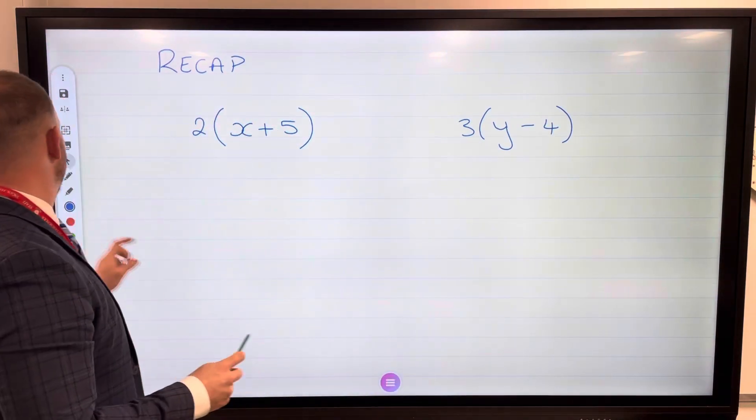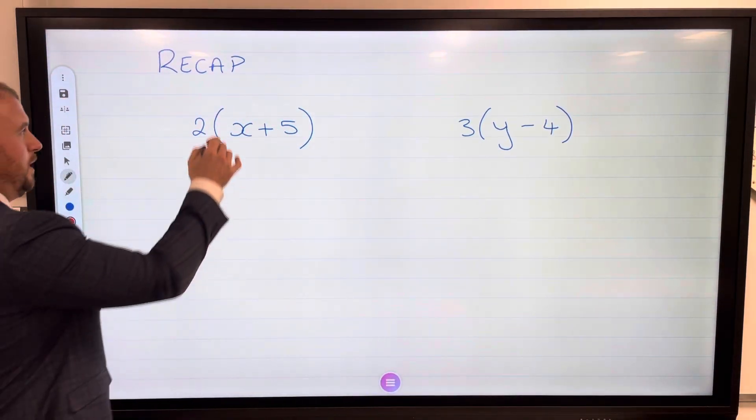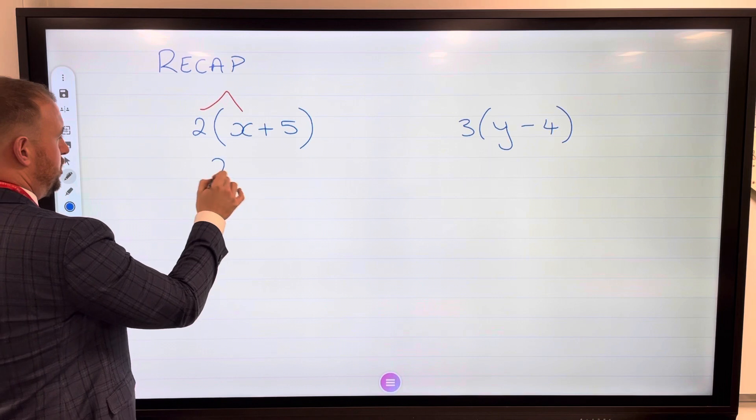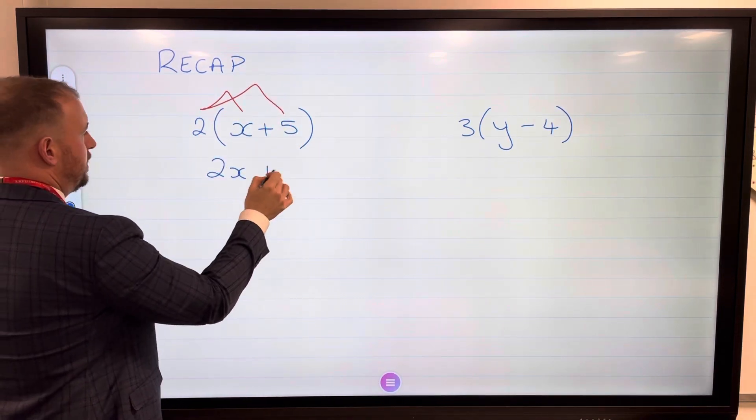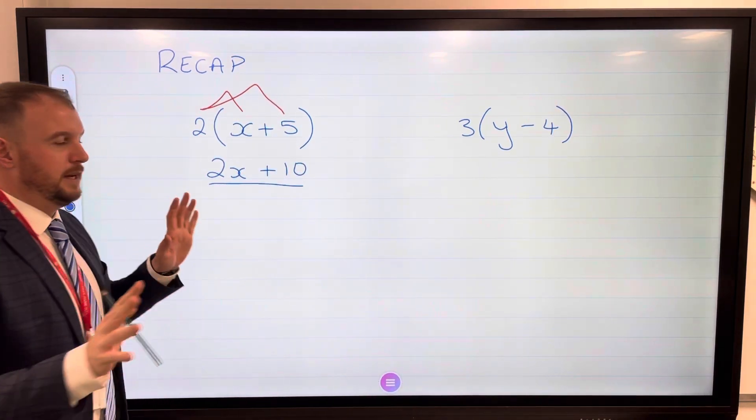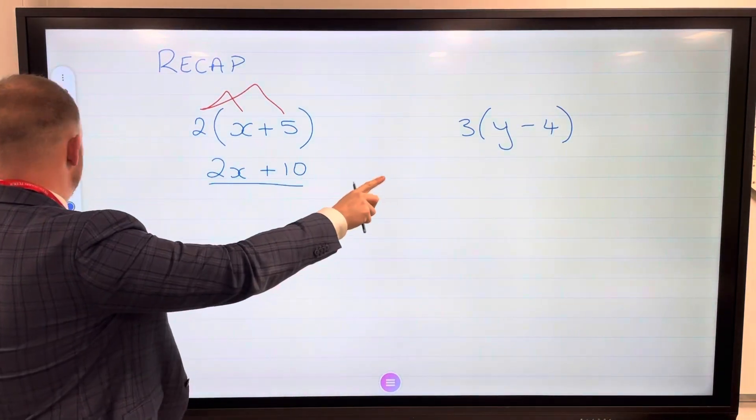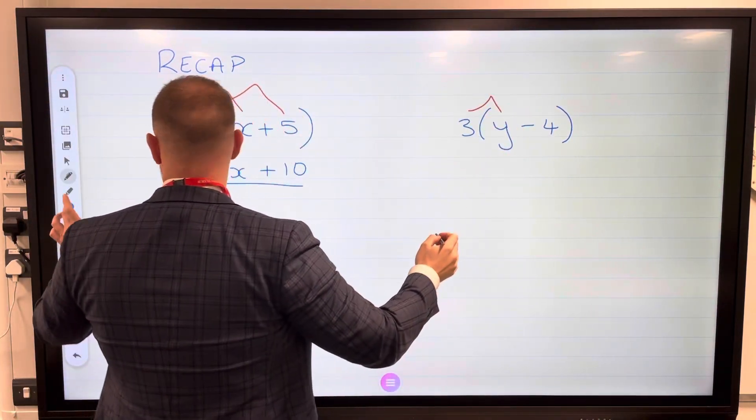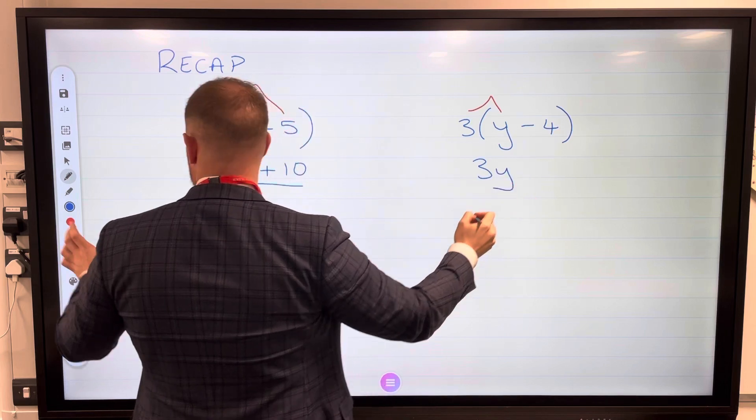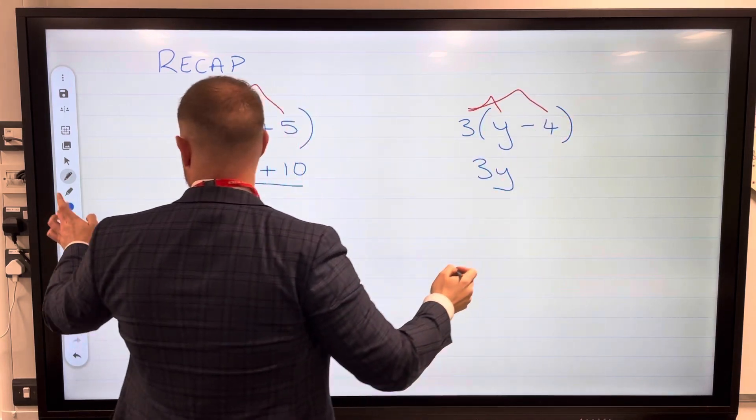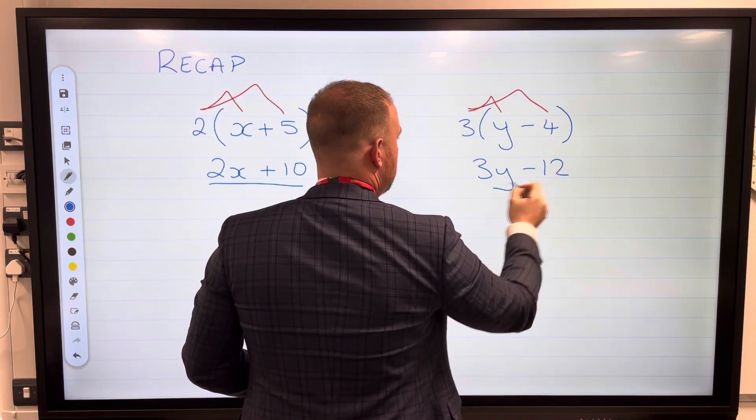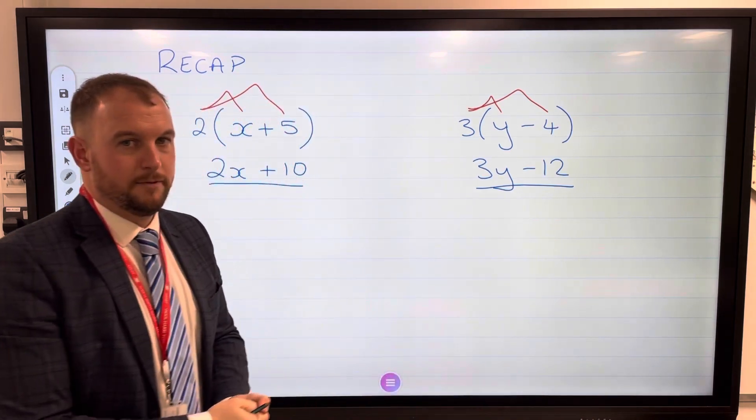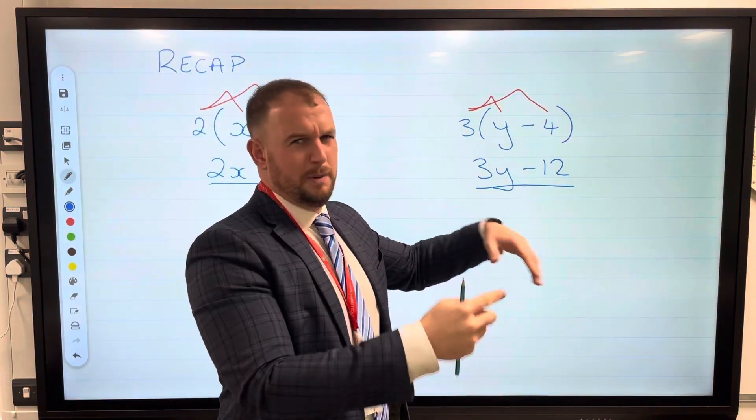But just to recap, I want to show you how we expand. We do 2 times x is 2x, 2 times 5 is 10, expanded, done. Just another one over here: 3 times y is 3y, 3 times minus 4 is minus 12, done, expanded. You're probably thinking you don't need to expand.